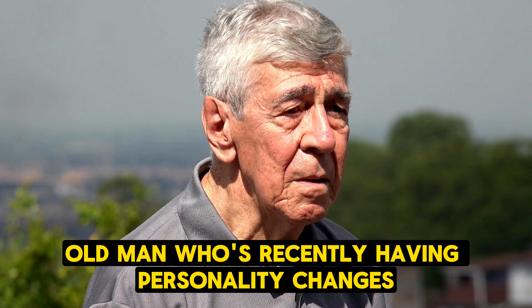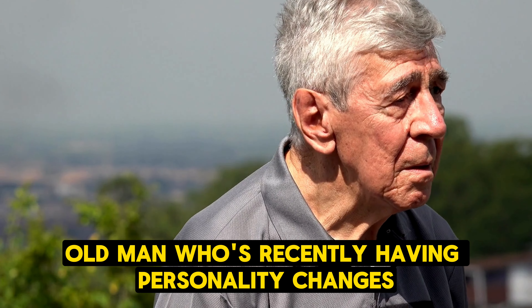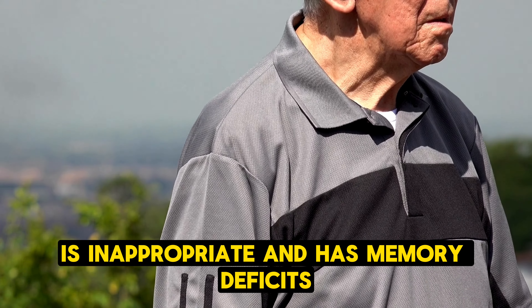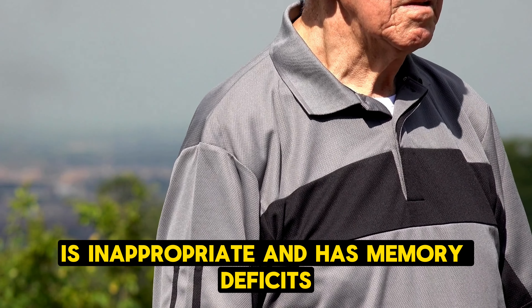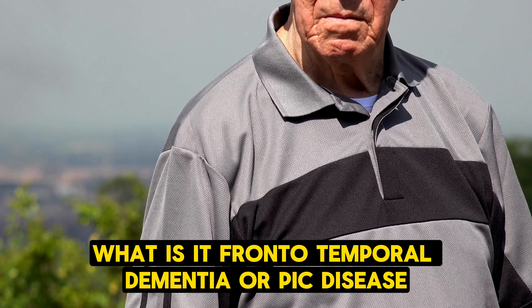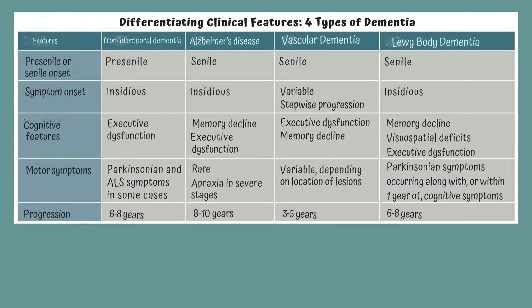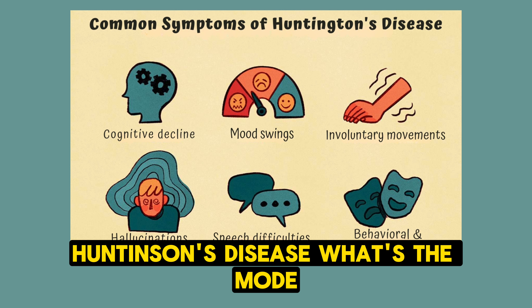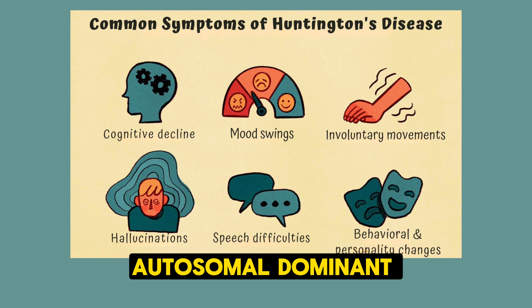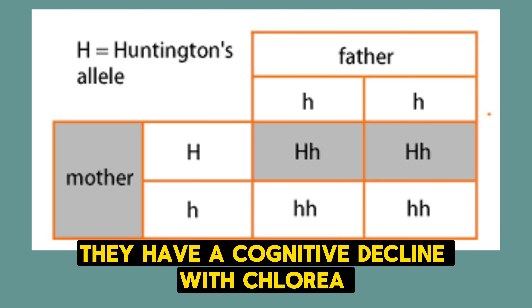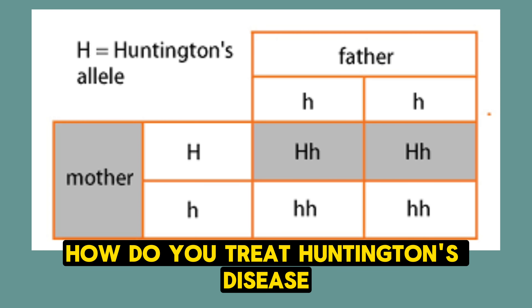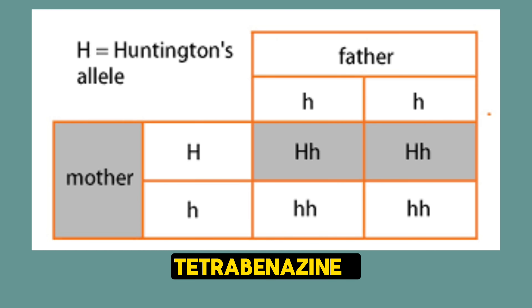An elderly man with recent personality changes, inappropriate behavior, and memory deficits — that's frontotemporal dementia or Pick's disease. Huntington's disease is autosomal dominant with cognitive decline and chorea; treat with tetrabenazine.